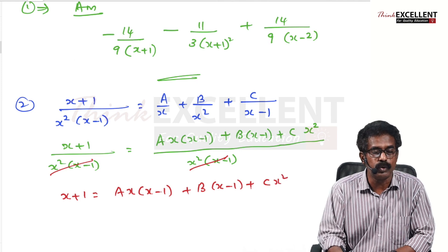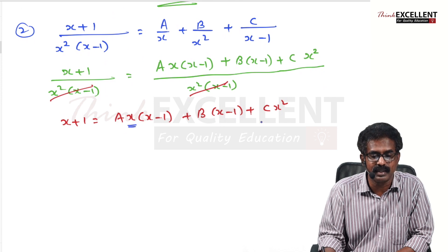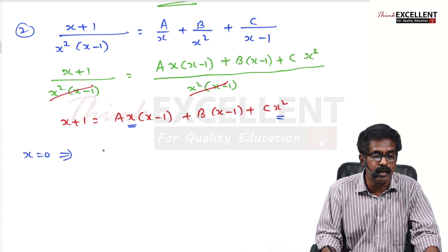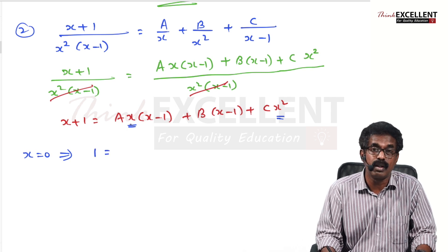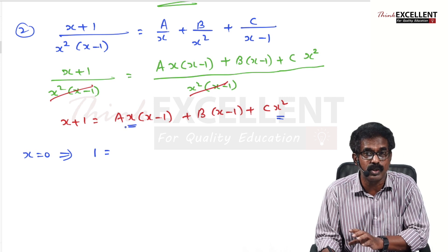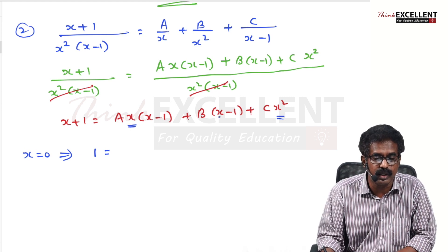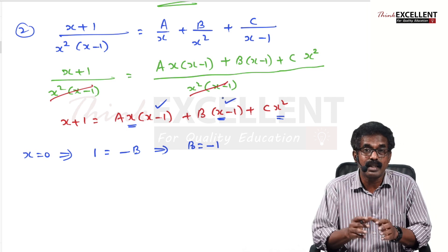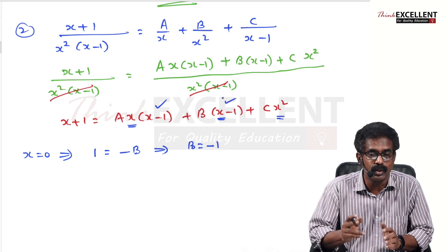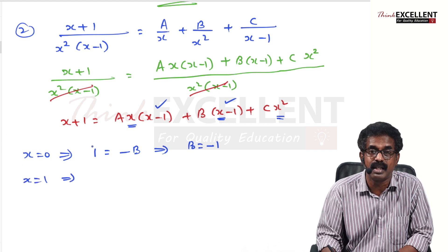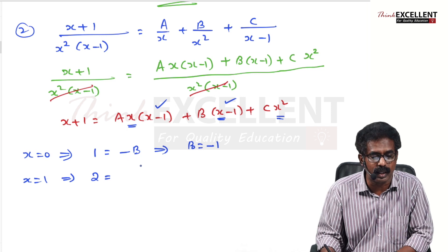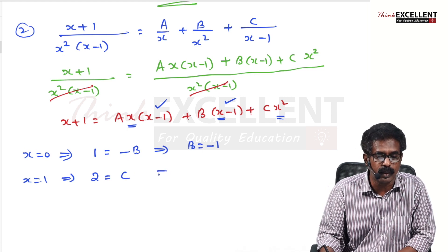To find B, put x = 0: the left side gives 1. The first and third terms become zero, leaving B·(0 − 1) = −B = 1, so B = −1. To find C, put x = 1: the left side gives 2. The first and second terms become zero, leaving C·1² = C = 2.